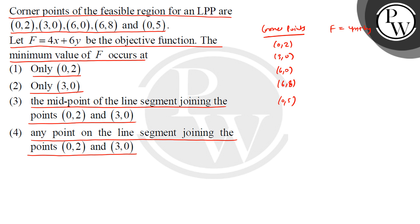If we look at the value at (0,2), we have F = 12. At (3,0), F = 12. At (6,0), F = 24. At (6,8), F = 72. And at (0,5), F = 30.